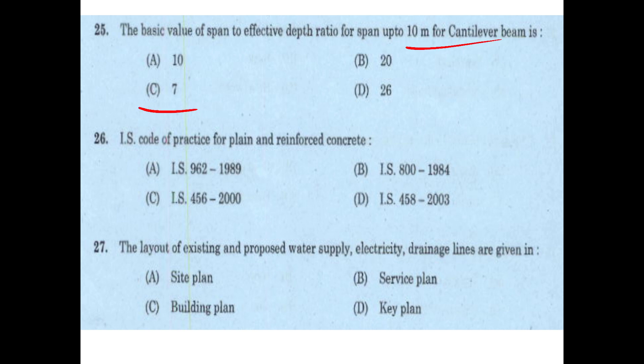IS code for code of practice for plain and reinforced concrete — option C — IS 456:2000. The layout of existing water supply, electricity, and drainage lines are given in — option B — a service plan.